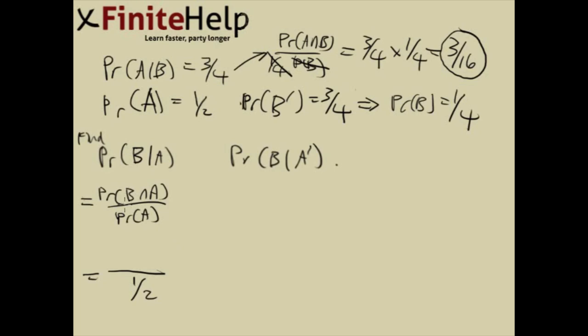For, well, B intersect A and A intersect B is the same thing. So here we simply plug in three-sixteenths divided by two is the same thing as times two. And we do the math. And it comes out to three-eighths for the first part.